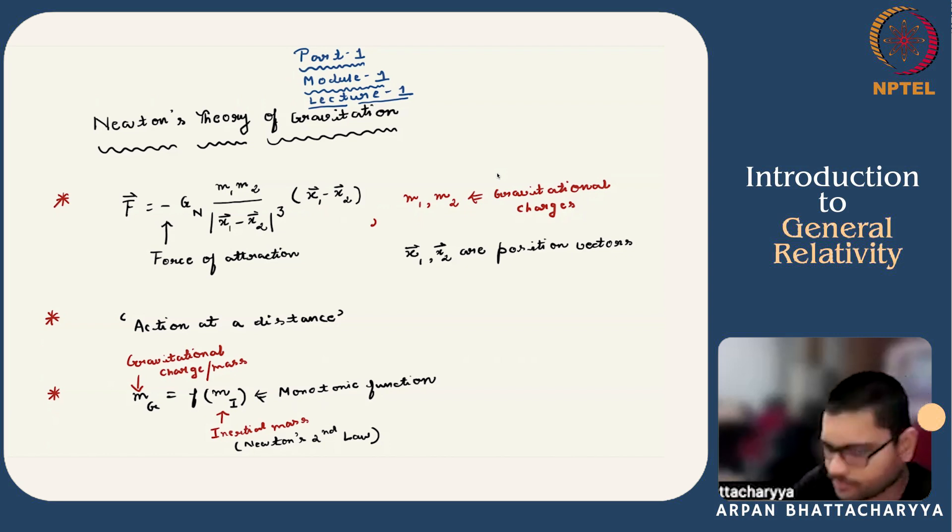We all know that Newton's law of gravity is encoded inside this formula. The F, which denotes the gravitational force between two objects one and two, is given by this inverse square law type expression. x1, x2 are the position vectors of the two objects, and m1, m2 are termed as gravitational charges or the gravitational mass.